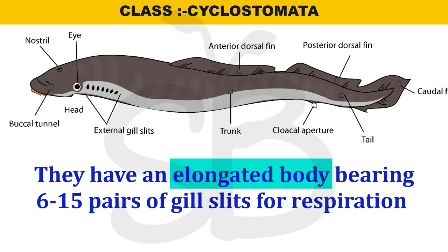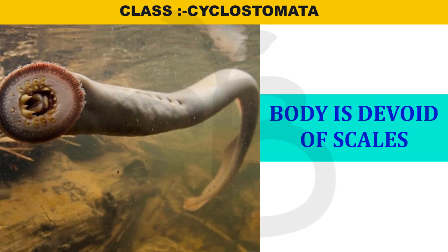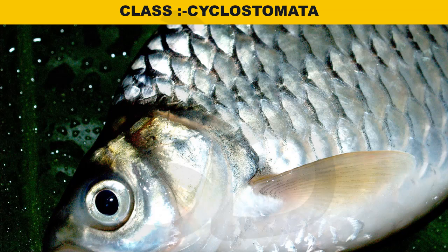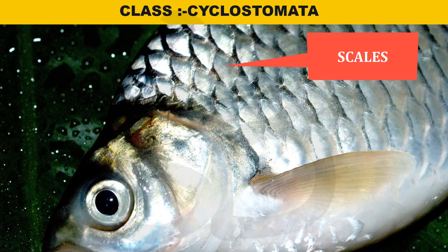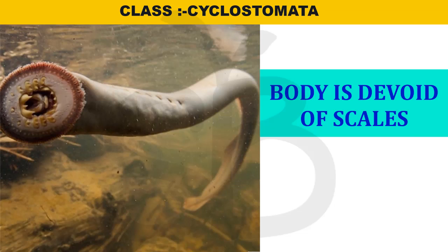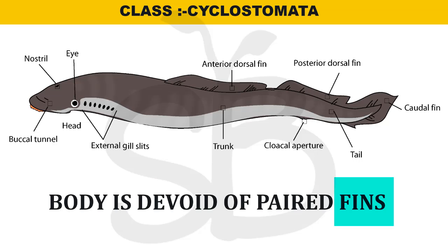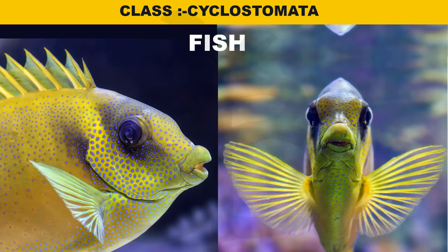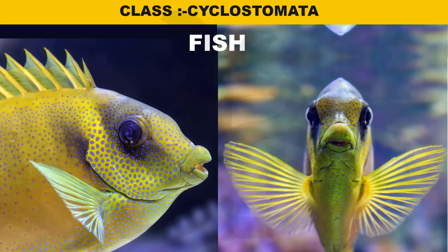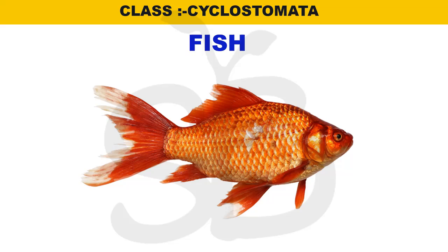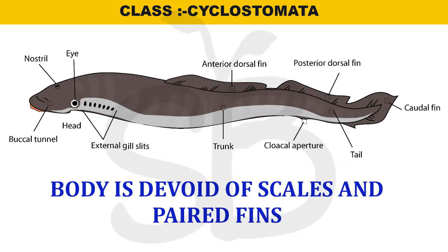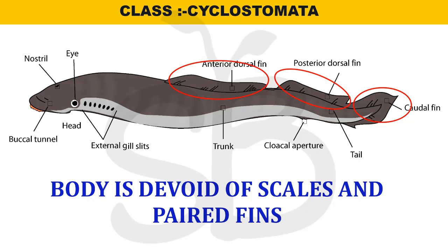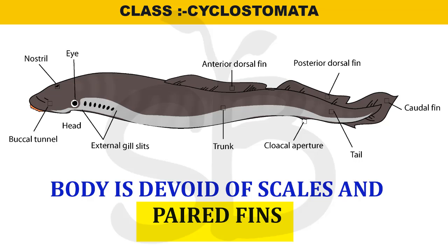The body is devoid of scales — scales are absent. Also, paired fins are absent in Cyclostomata members. Their body is devoid of both scales and paired fins.